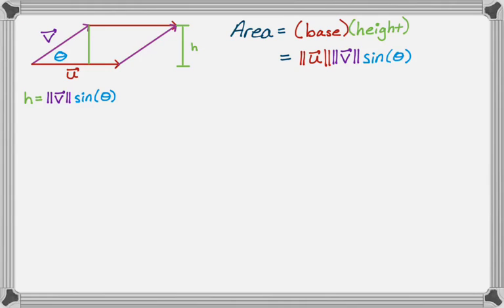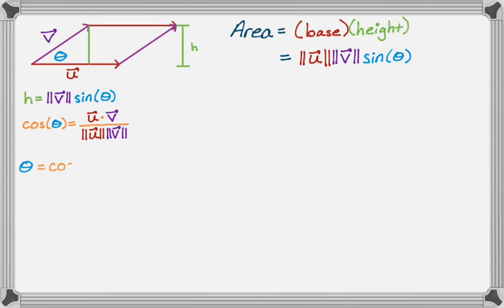That's not so bad. We know that theta is related to u and v because the cosine of theta equals u dot v over the product of the magnitudes — magnitude of u times magnitude of v. So theta is the inverse cosine of the dot product over the product of the magnitudes. Hopefully that's kind of second nature to you at this point.